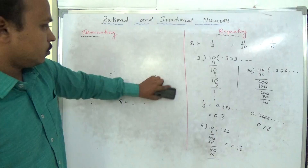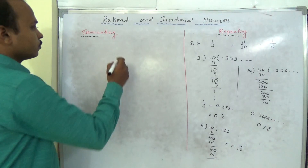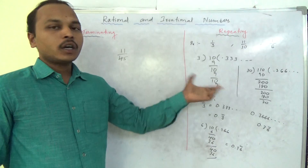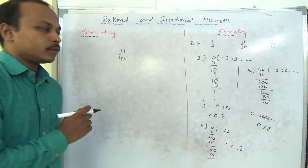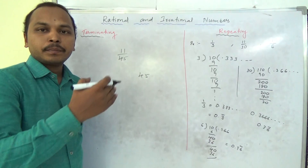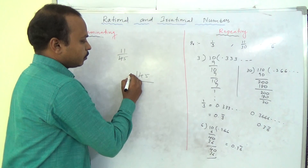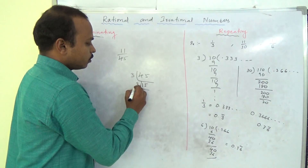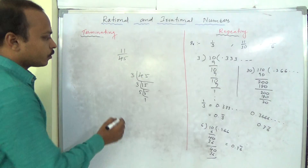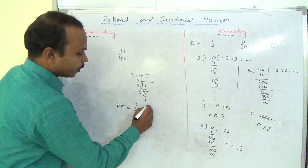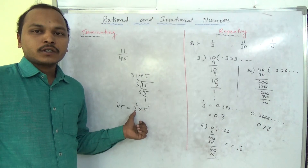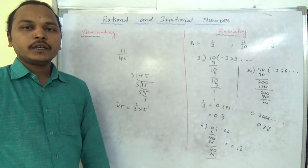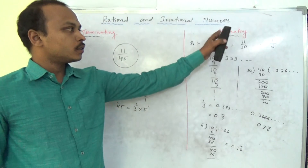One more example: 11 by 45. Let us check whether it is terminating or repeating. Take the denominator 45 and find its prime factors. 3 into 15 is 45, then 3 into 5 is 15, so 45 equals 3 squared times 5 to the power 1. Here an extra 3 is included apart from 5 and 2. Except 5 and 2, if any other prime number is included as a prime factor, it is a repeating decimal. So 11 by 45 is a repeating decimal.